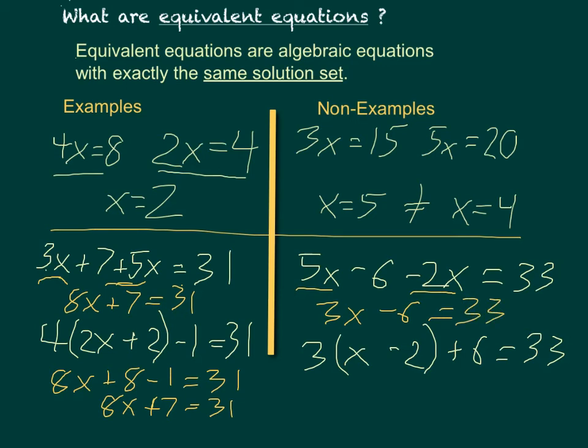You can leave it there for now because it looks similar on the bottom. If I distribute, I do get 3x minus 6. Then the difference is I also have this plus 6 in here equals 33. So in this case, the plus 6 and minus 6 cancel out, and this gives me 3x equals 33 as opposed to 3x minus 6 equals 33.